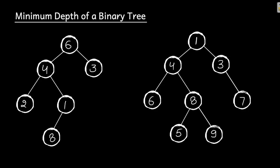Hello everyone, welcome back. So this is the fourth BFS problem we are doing. The problem statement is: we have to find the minimum depth of a binary tree. Let's first understand what depth means. Depth is the number of nodes along a path from root to leaf.